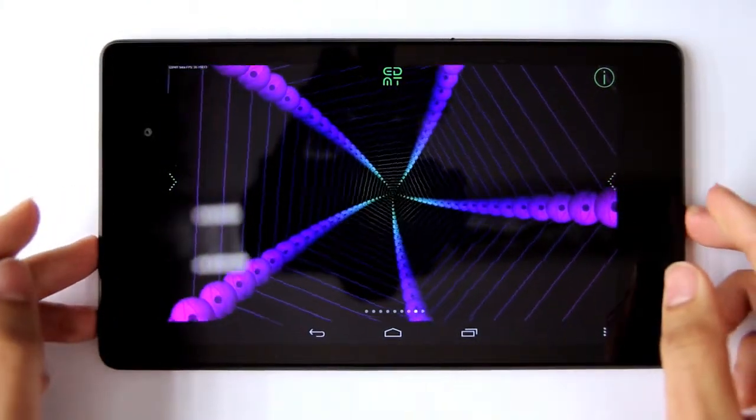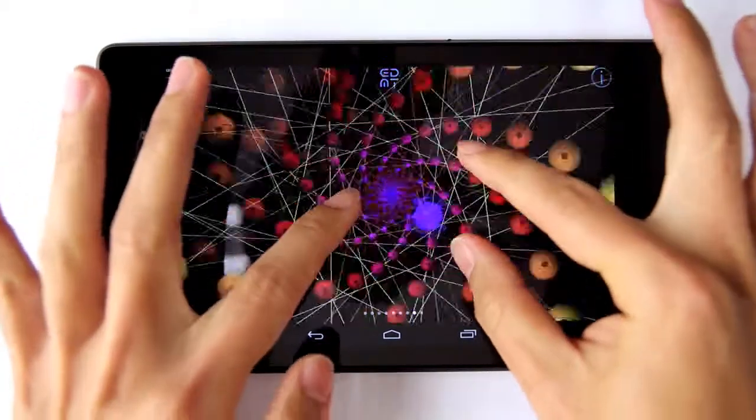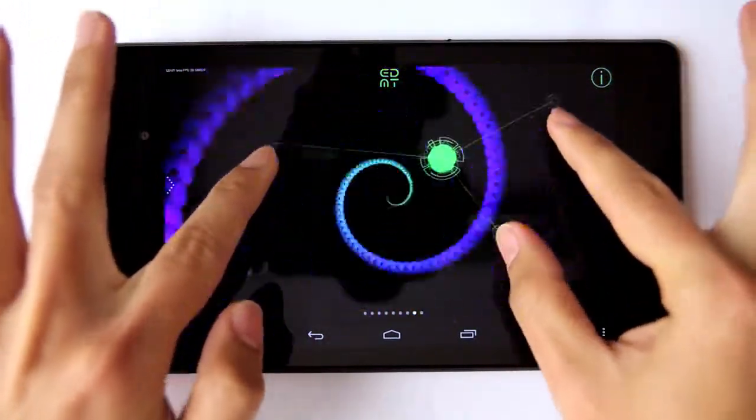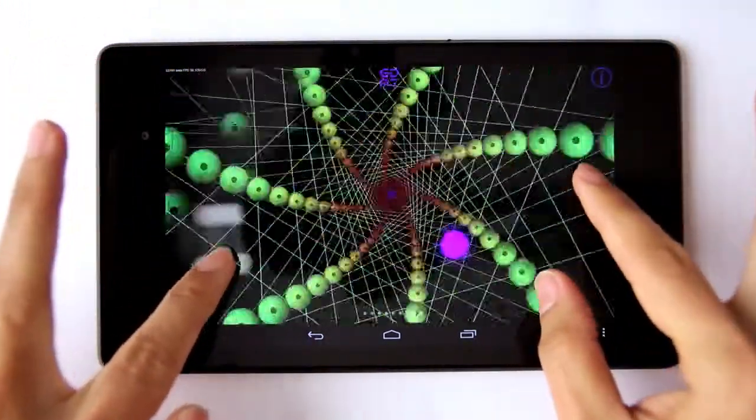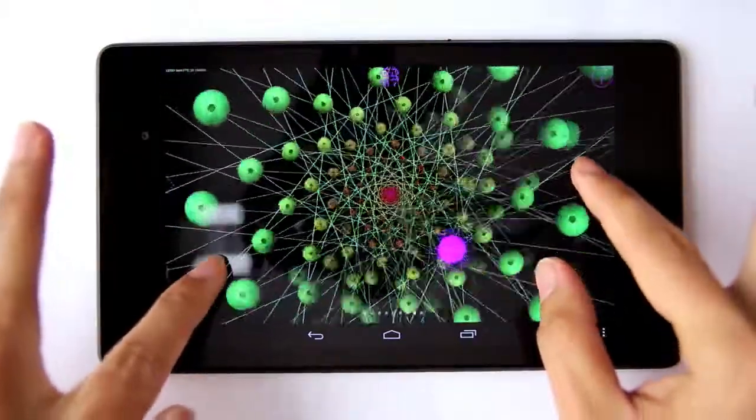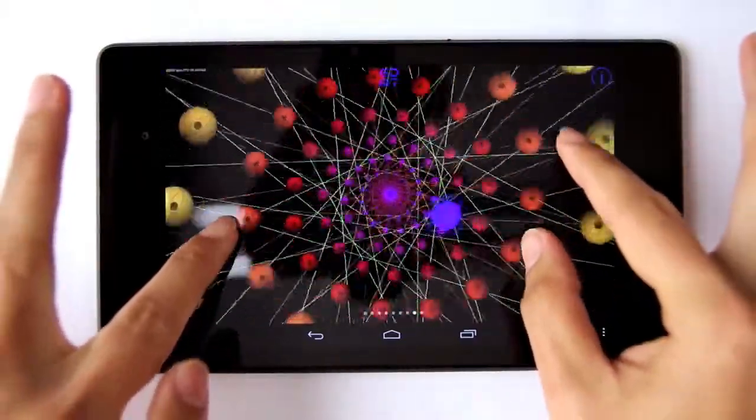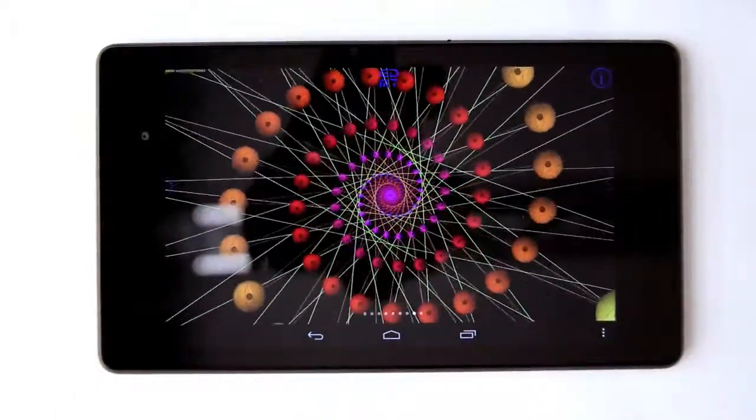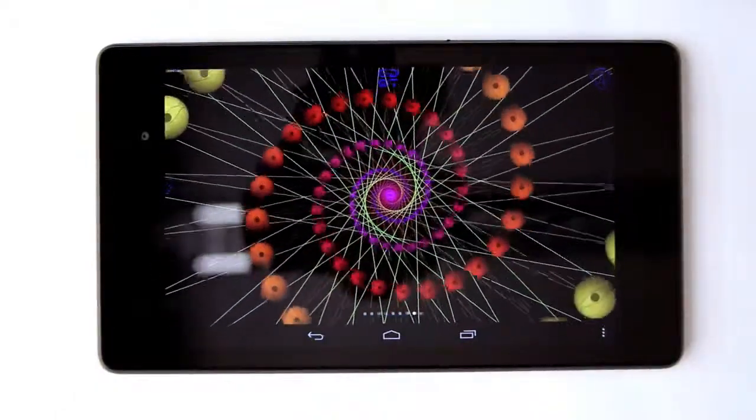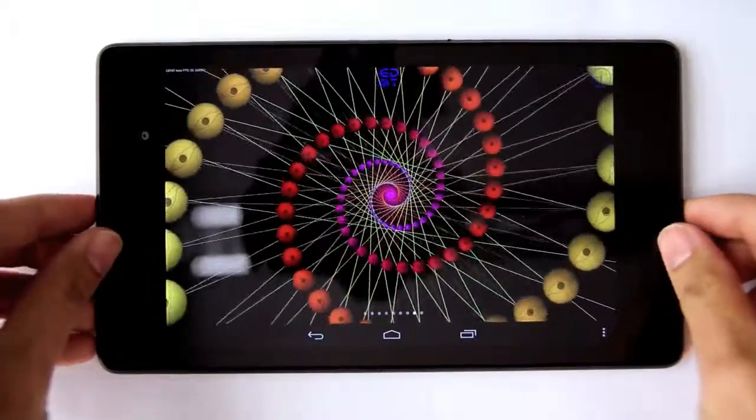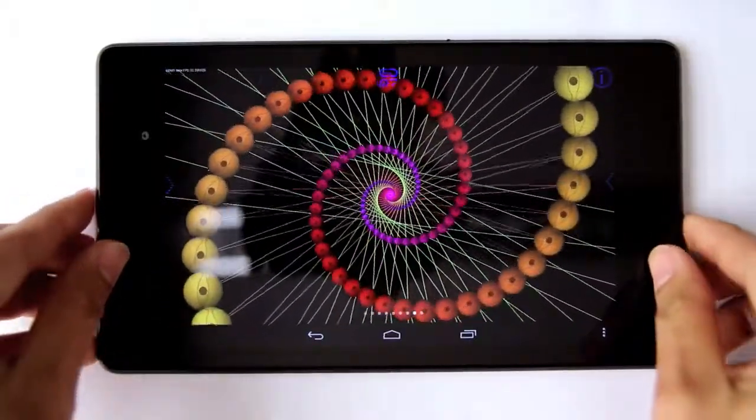You can use three fingers to change colors in all of the scenes. Very easy and intuitive. You can shake your tablet or your device to switch to a different graphic and different sound preset.